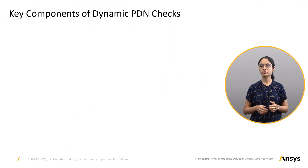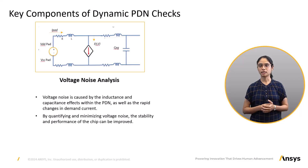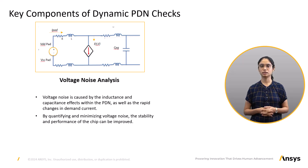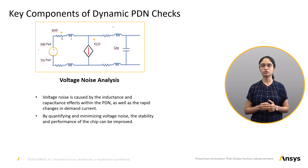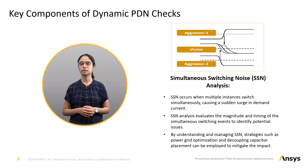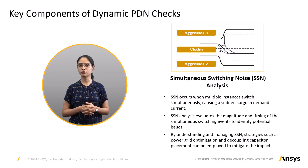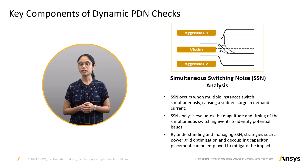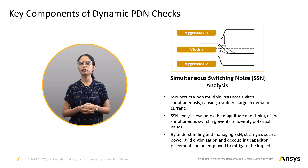Key components of dynamic PDN checks. Voltage noise analysis: dynamic PDN checks model the PDN grid as reactive elements — capacitance, inductance and resistance. Voltage noise is caused by the inductance and capacitance effects within the PDN as well as rapid changes in the on-die current. By quantifying and minimizing voltage noise, the stability and performance of the chip can be improved. Simultaneous Switching Noise (SSN) analysis: SSN occurs when multiple instances switch simultaneously, causing a sudden surge in chip current. SSN analysis evaluates the magnitude and timing of simultaneous switching events. By understanding and managing SSN, strategies such as power grid optimization and decoupling capacitor placement can be employed to mitigate the impact.